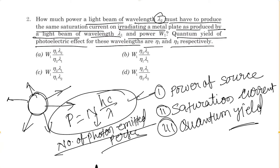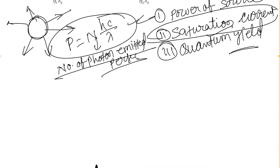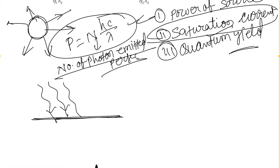Now talking about saturation current, the second term involved in this question. Saturation current is a very broad term, but I will provide you a rough idea about it. We all know that when a photon beam is incident on a metal plate, the free electrons receive energy and try to come out from the metal surface — this is called the photoelectric effect. Suppose this is a metal surface and photons are incident on it, then electrons receive energy and start to come out from the surface.